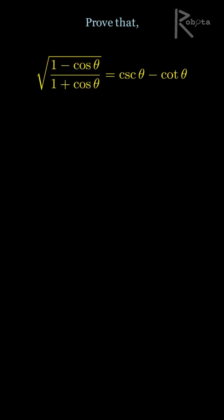Let's prove the trigonometric identity that the square root of 1 minus cos theta divided by 1 plus cos theta is equal to cosec theta minus cot theta.